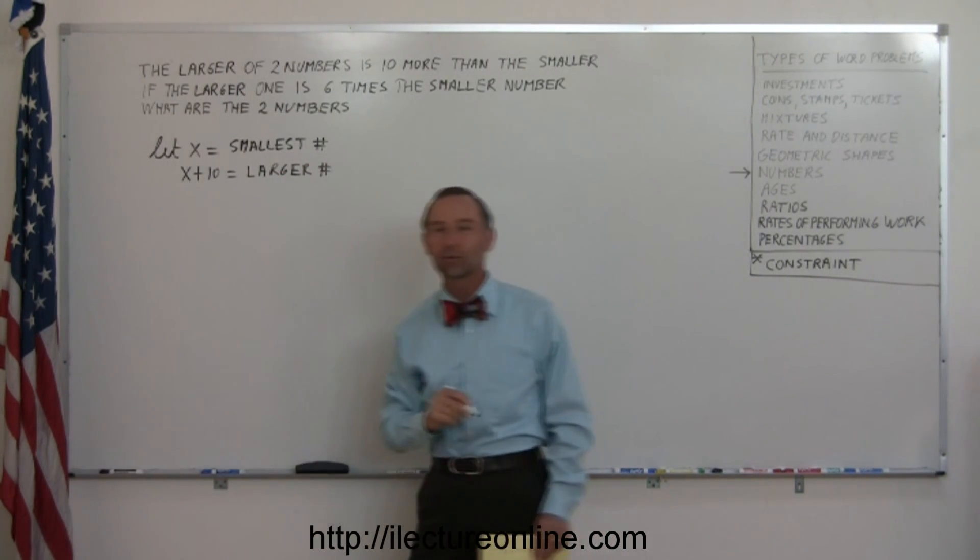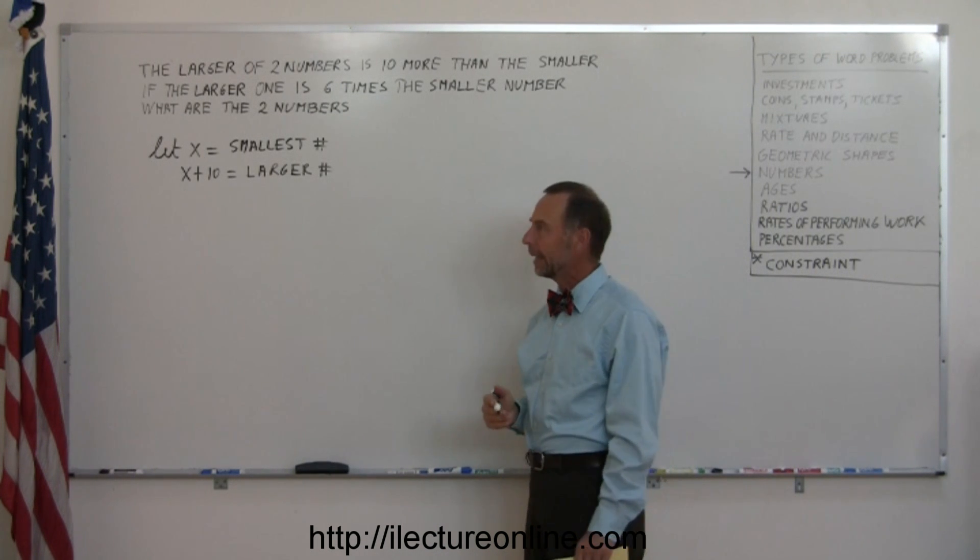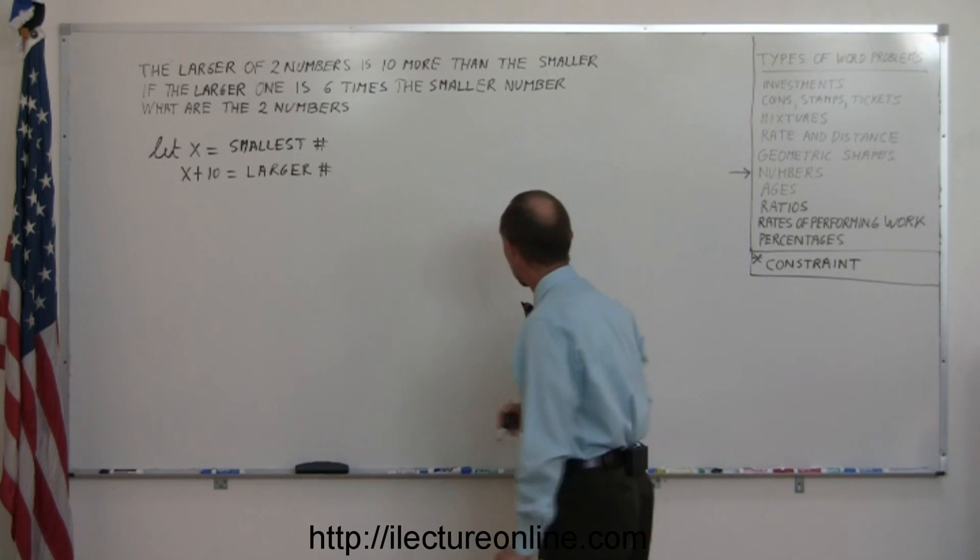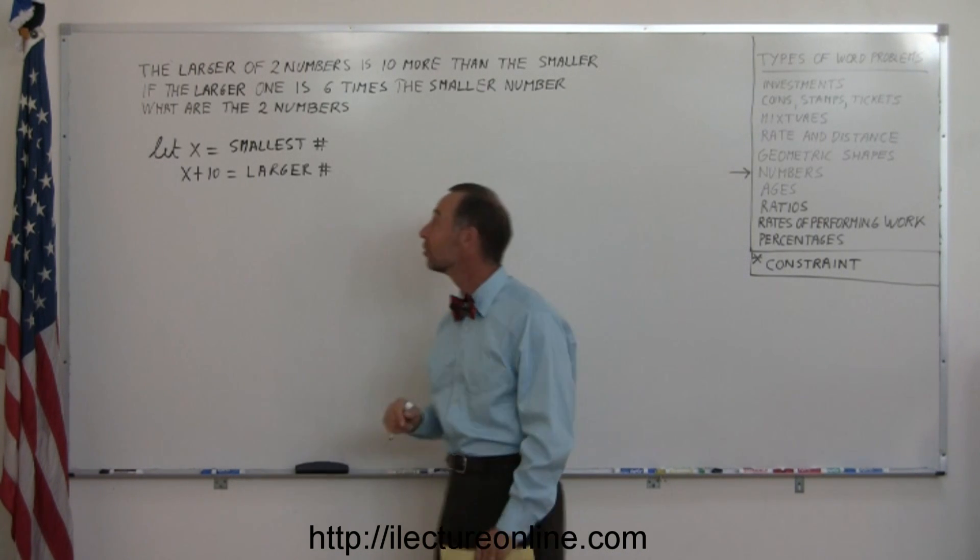So now you have to find your two numbers. Now we want to solve what those two numbers are. And for that, we need a constraint. We're looking for some information that helps us figure out what these two numbers are.